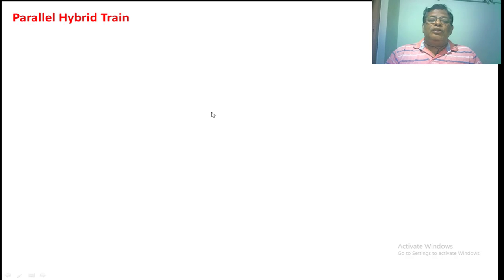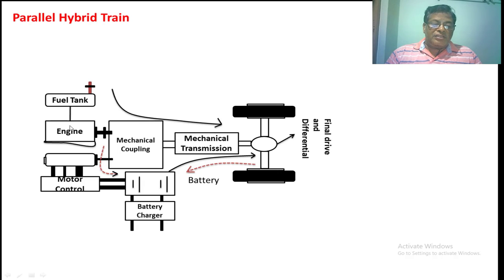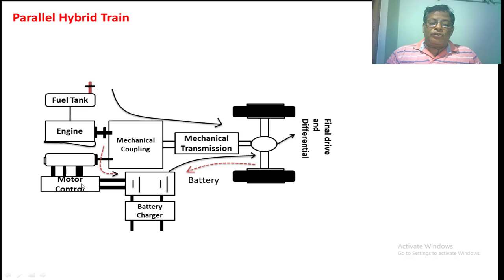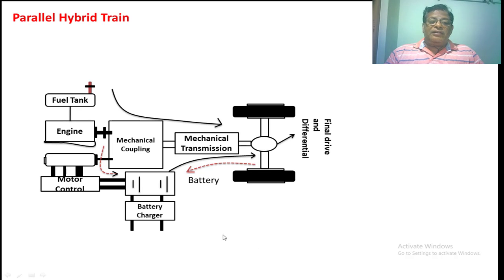All these disadvantages can be overcome with a parallel hybrid vehicle. In a parallel hybrid, the two sources give mechanical power to the vehicle in parallel. Here, the fuel tank and IC engine provide mechanical output to a mechanical coupling. A motor is placed alongside to assist the mechanical output from the IC engine, powered from a DC source via the motor control circuit and battery. From the mechanical coupling, a transmission shaft carries power to the wheels through the differential. Compared to the series hybrid, the generator placed after the IC engine is removed.